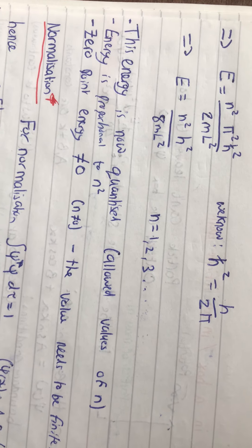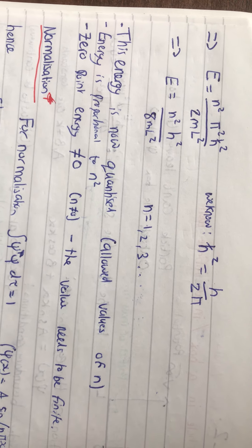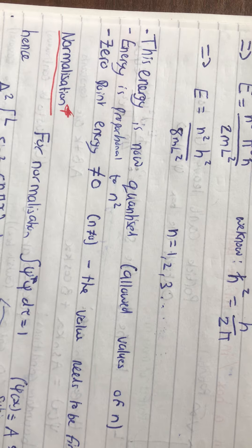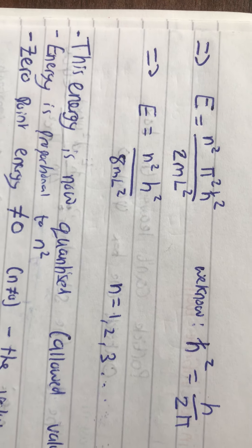where n is equal to an integer number. And, this energy is now quantized, which means it's allowed for all values of n. And, the energy is proportional to n squared, as we know, because we've got that n squared term in the top here.